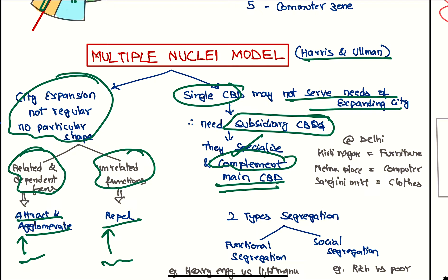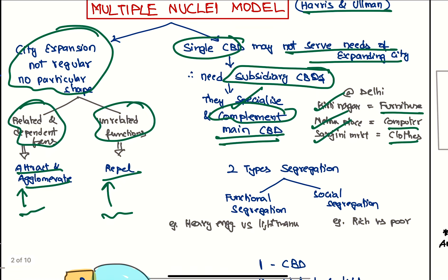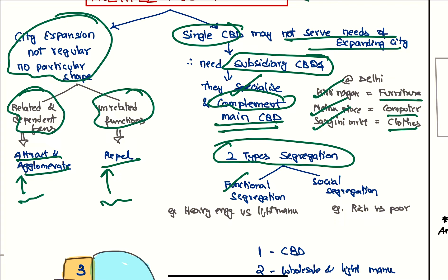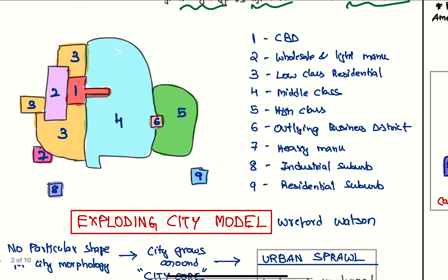For example, in Delhi, Kirti Nagar is known for furniture, Nehru Place for computers, and Sarojini Market for clothes. Two types of segregation can be seen in this model: functional segregation, like heavy engineering versus light manufacturing, and social segregation, rich versus poor. Here we have the CBD, around this is wholesale light manufacturing. Lower class lives near the working place, and middle class and higher class live here.